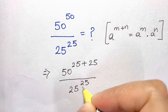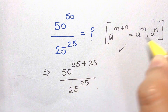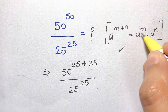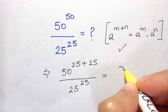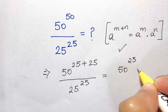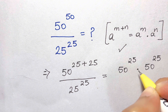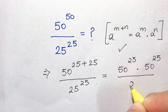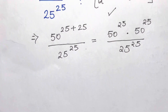Now we apply the law a^(m+n) = a^m · a^n, splitting it into a multiplication: 50^25 times 50^25, over 25^25. When you have the same base in multiplication, you add the powers — that's what was done here.